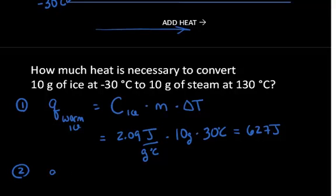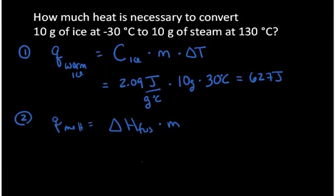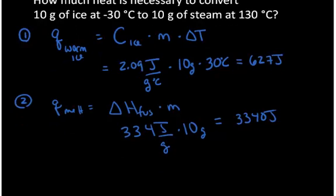Step two is the amount of heat it takes to melt the ice. For that, we use the enthalpy of fusion times the mass. The heat of fusion value is given in joules per gram of ice, so: enthalpy of fusion × 10 grams = 3,040 joules. That's the heat for step two.